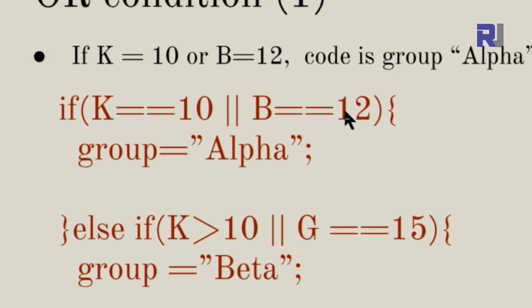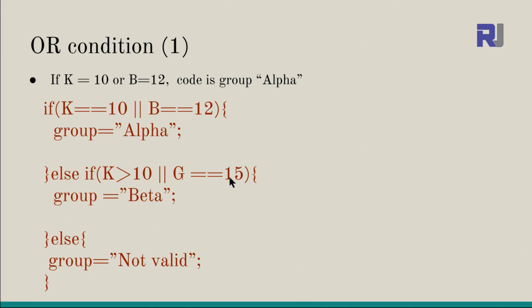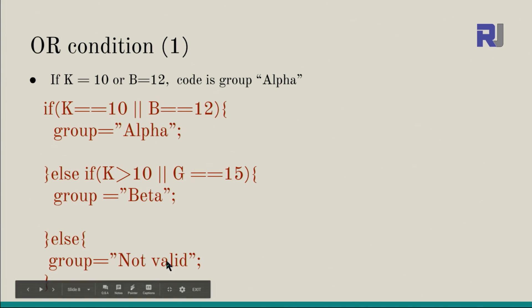If that is not true, the code jumps to the else-if and checks: if K > 10 — meaning K must be 11 or higher — OR G == 15, then we assign 'beta' to group. Else means neither condition was true, so 'not valid' is assigned to group.